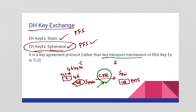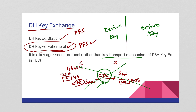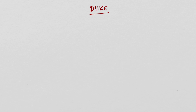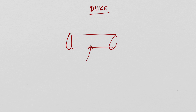Whereas in Diffie-Hellman key exchange, we don't transport anything. Instead, both parties derive the key on their own side using a certain formula. Both parties separately derive the key using a common formula. The Diffie-Hellman key exchange is a key agreement protocol that allows two parties to establish a shared secret over an insecure communication channel. The channel itself is insecure — any hacker can look at the channel and see what is going on.